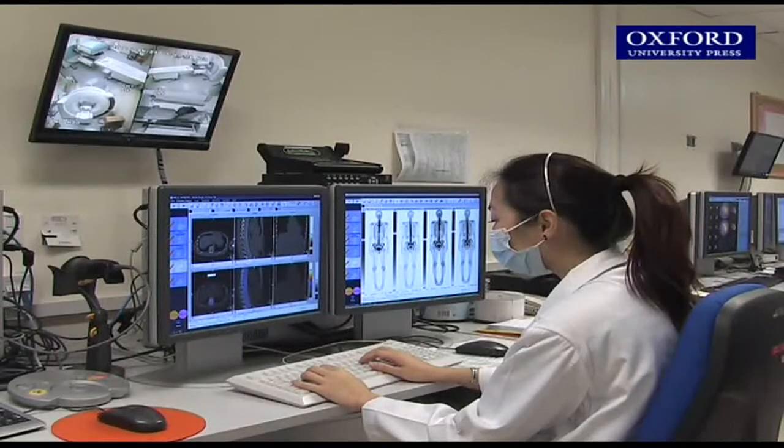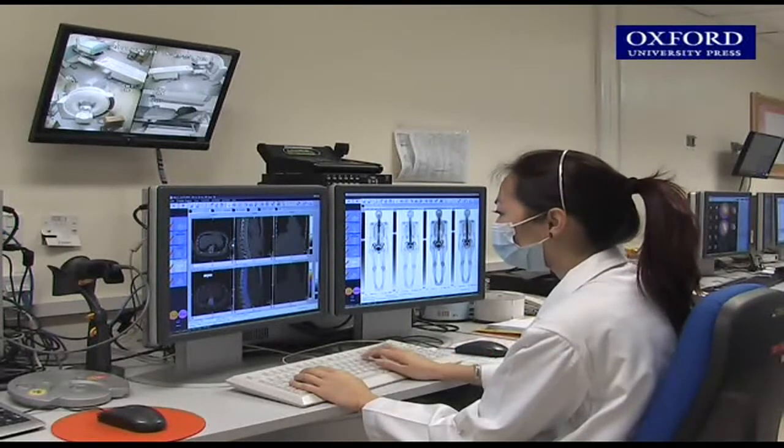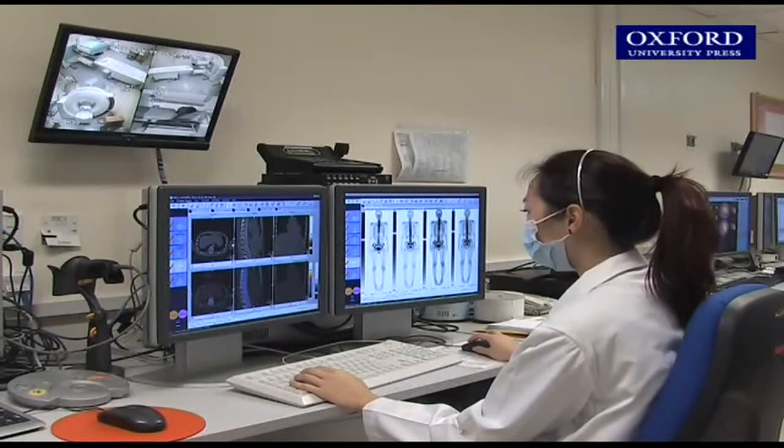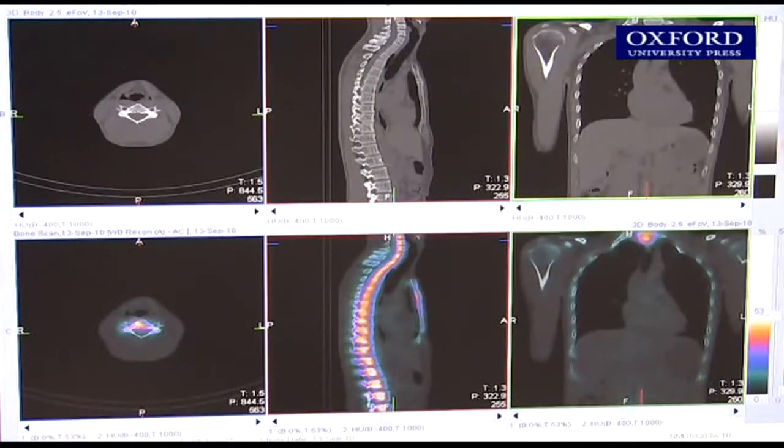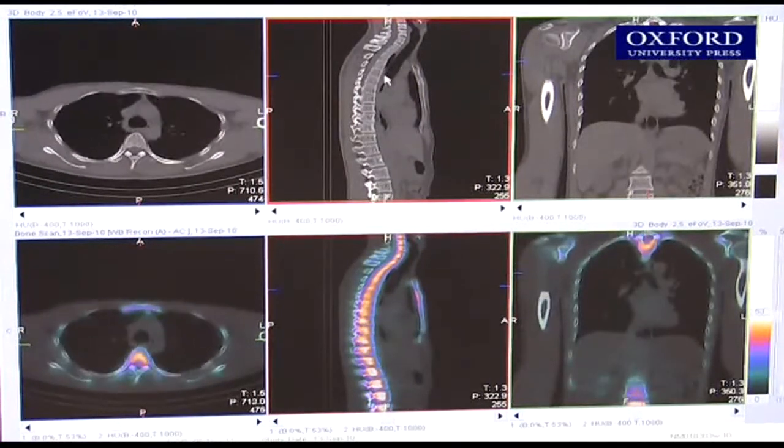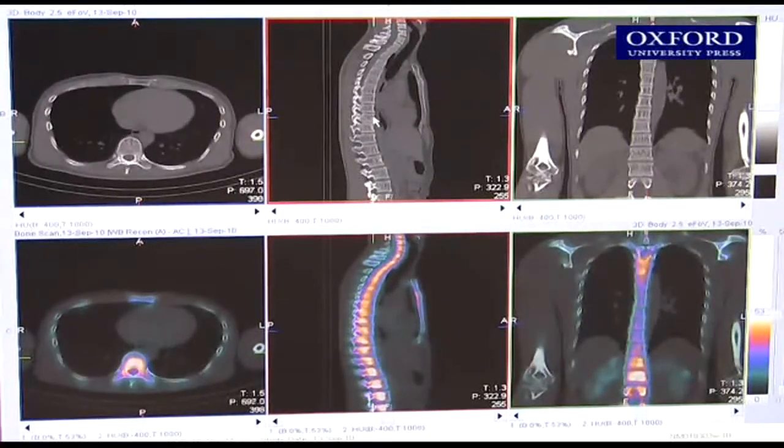The radiographer in another room monitors the patient through the CCTV and controls the gamma camera with the computer. The images on the computer screen show the distribution of the tracer inside the patient's body, that is, the picture of the target organ.